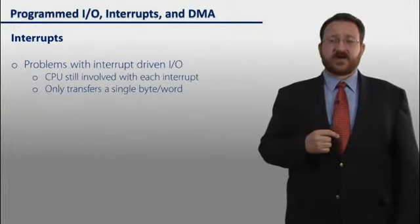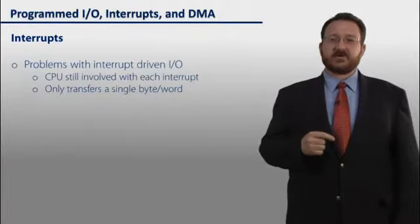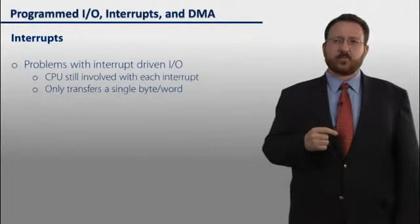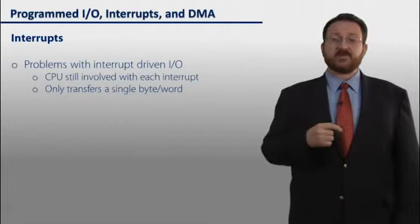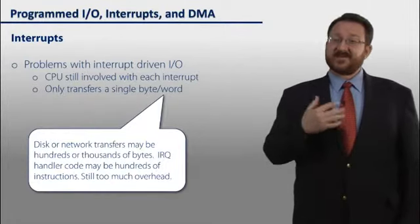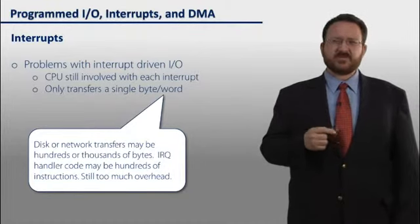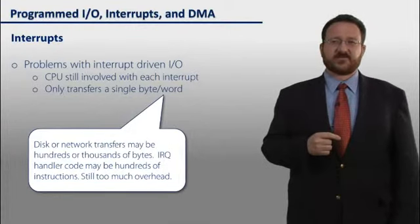There are some problems with interrupt-driven IO. And that is that the CPU is still involved with each interrupt. And furthermore, this only transfers a single byte or a single word at a time. What we would really like is the ability to have multiple bytes processed with a single interrupt. Because disks and networks transfer thousands of bytes at a single time, there's too much overhead for the CPU to be constantly going back and forth transferring a byte at a time.